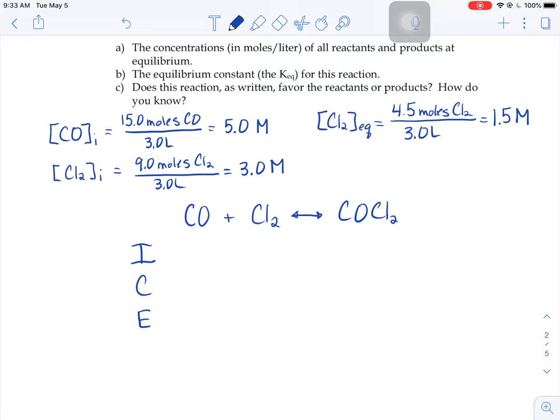So carbon monoxide's initial molarity is 5. The chlorine's initial molarity is 3. And the chlorine's equilibrium molarity is 1.5.